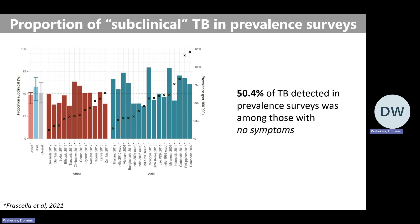This suggests there isn't an instantaneous process of moving from latent to active TB — there's a pathway that patients generally take. Another paper most of you are probably familiar with is a meta-analysis looking at prevalence surveys — 23 in African and Asian settings — in which around half of the individuals diagnosed with bacteriologically positive TB didn't report any symptoms within the survey. So people don't go from no symptoms to symptoms immediately; there's a phase in which they may be bacteriologically positive as well.